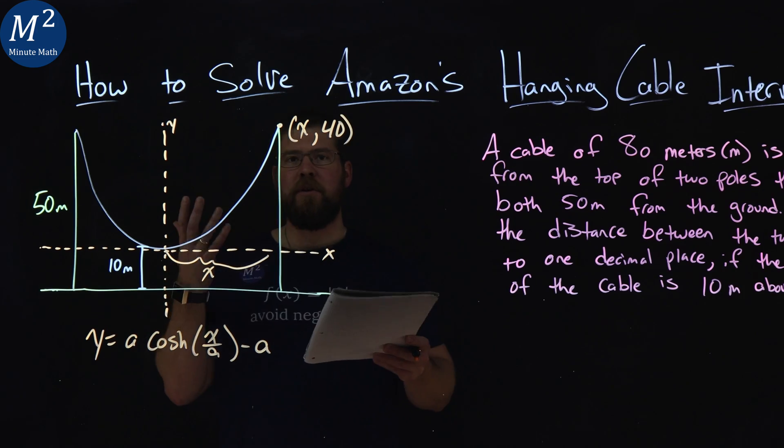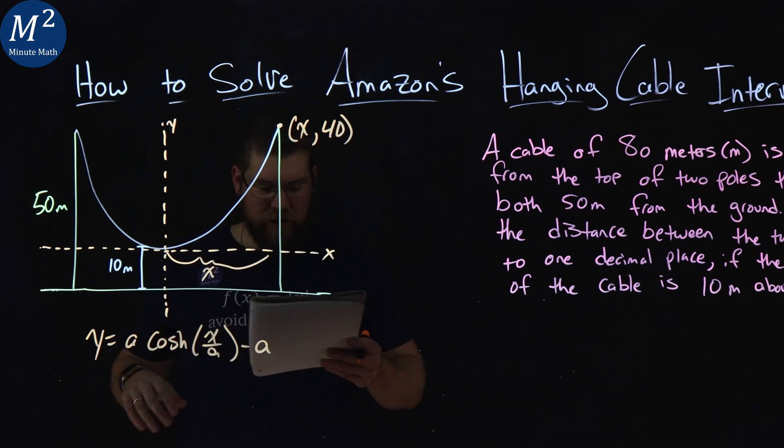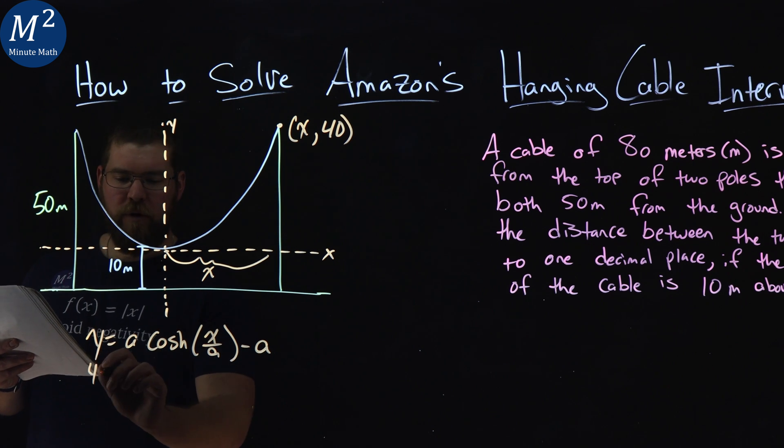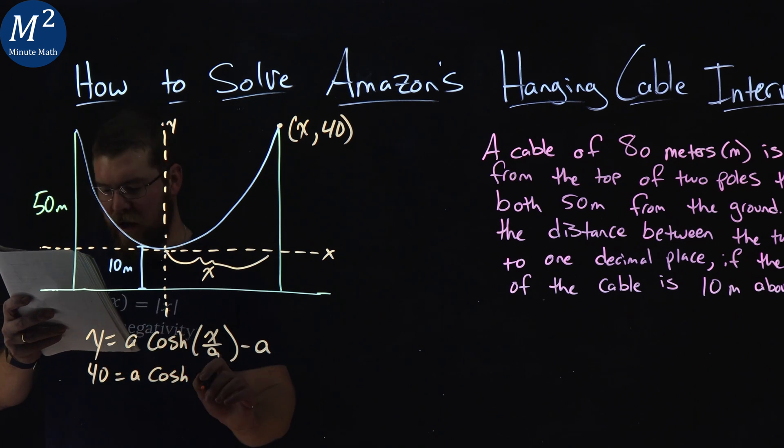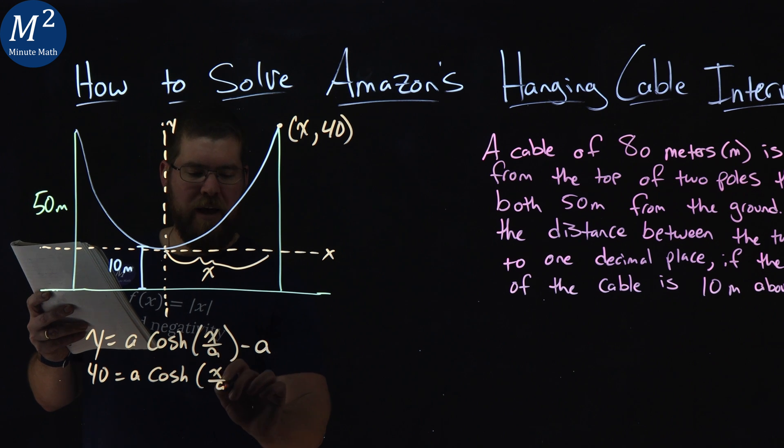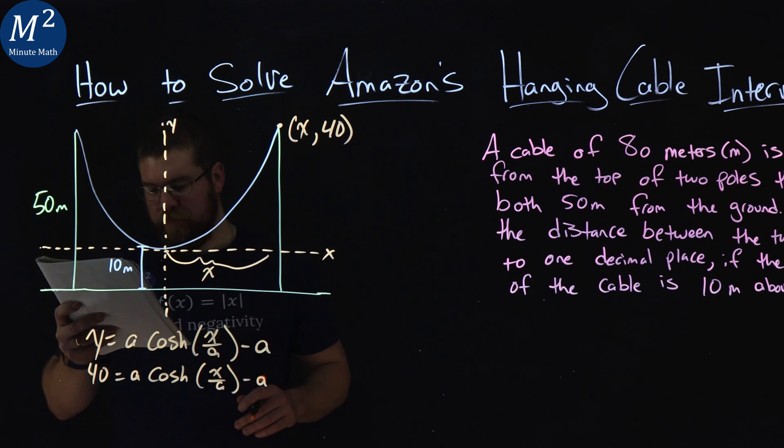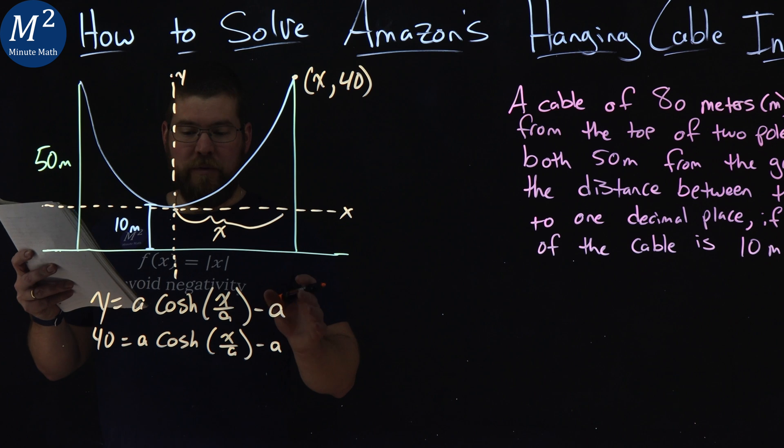And now we're going to fill in values that we know. Our y value is going to be 40 here. So we have 40 equals a cosh of x over a minus a.